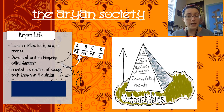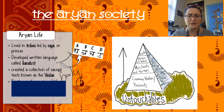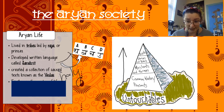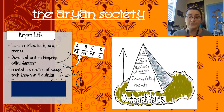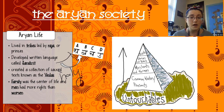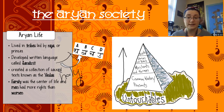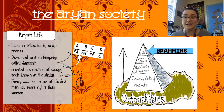In Harappa and Mohenjo-daro, most of the houses were the same size and there don't seem to be really huge temples, so we think most people were relatively equal. But in the Aryans, we see a change — a very strict system dividing up people — and this is something that's going to continue forward in India for many, many thousands of years. The family was the center of life, and men had more rights than women. This is their organization: their caste system.